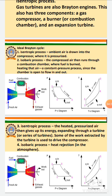In the TS diagram: in process 1 to 2, temperature increases and entropy remains constant during isentropic compression. In process 2 to 3, when fuel is burned in the combustion chamber, temperature increases and entropy increases. In process 3 to 4, when air expands through the turbine, temperature decreases and entropy remains constant. In process 4 to 1, when exhaust leaves the turbine, temperature drops rapidly and entropy also decreases as heat is rejected. This completes the full Brayton cycle.